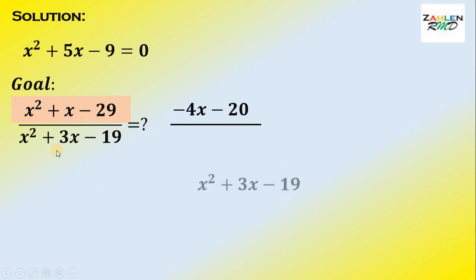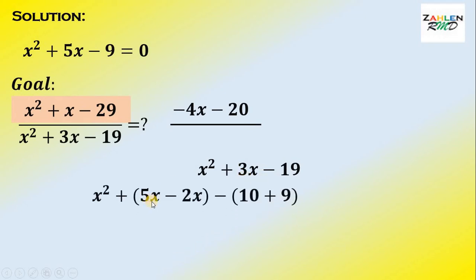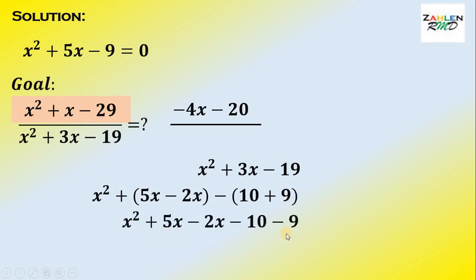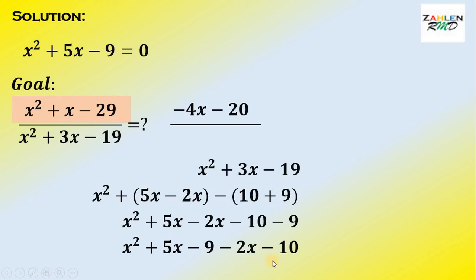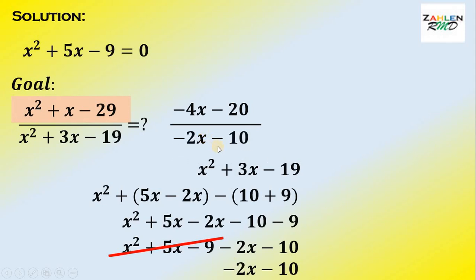Now for the denominator: x squared plus 3x minus 19. We rewrite 3x as 5x minus 2x, and 19 as 10 plus 9. Distributing the negative sign gives x squared plus 5x minus 2x minus 10 minus 9. Rearranging: x squared plus 5x minus 9, minus 2x minus 10. Again, x squared plus 5x minus 9 equals 0, so that term cancels, leaving the denominator equal to negative 2x minus 10.